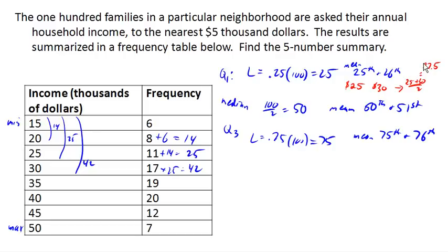So let's continue on here. So if we continue counting, if we go 42 plus our 19 there, it gets us up to 61. So we have 61 pieces of data here. So that means that data values 50 and 51 both fell in the 35,000 category. So the mean of those is 35,000.